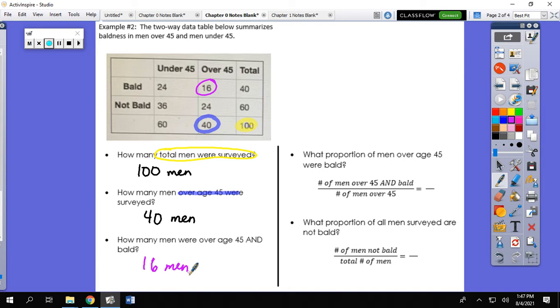So what proportion, what ratio, what is the probability of men over 45 being bald? We would take the number of men over 45 and bald, which we said was 16. And we would put it on over the total of the men who are over 45 years old, which is 40. And we would reduce. 16 and 40 are both divisible by 8. That reduces to 2 fifths. We could also say 0.4 or 40%, depending on what the answer is looking for.